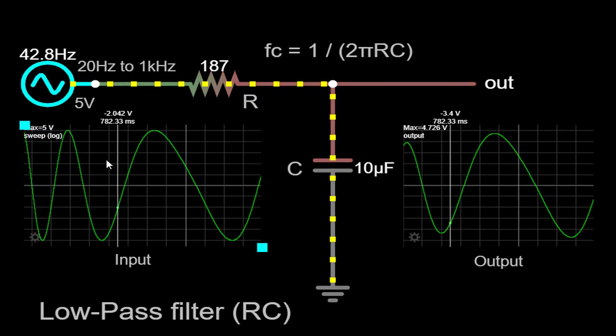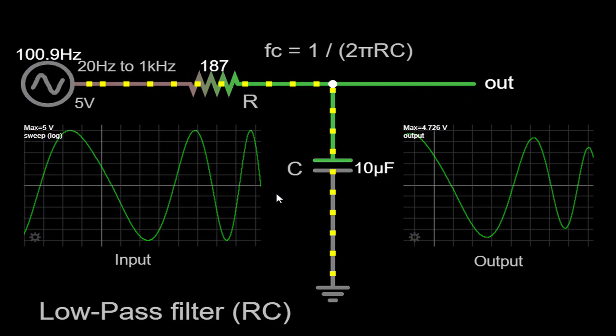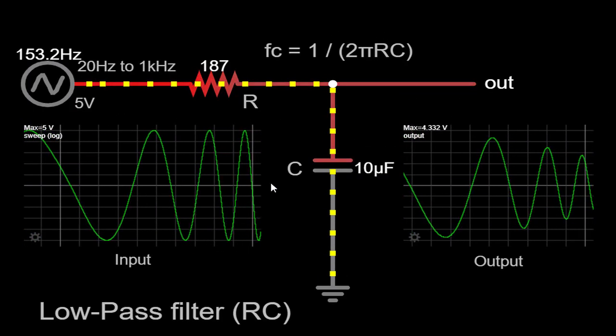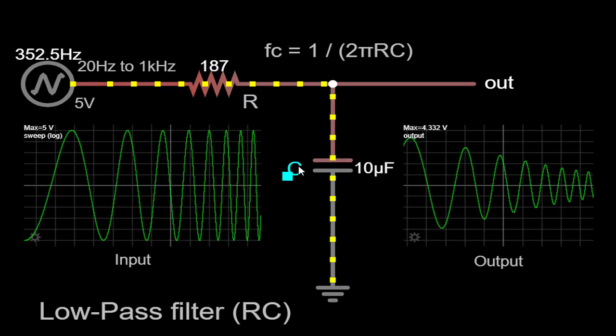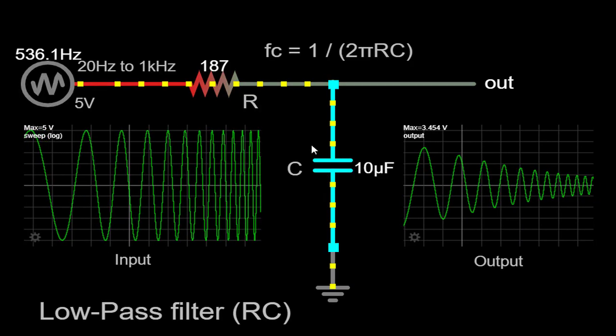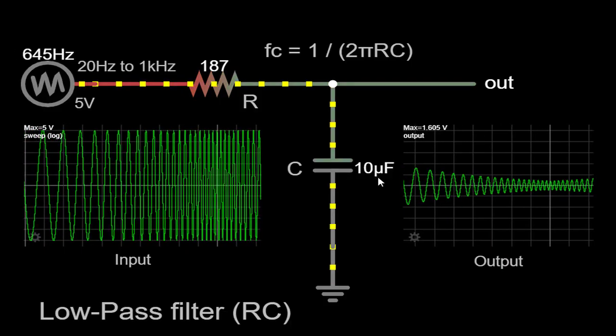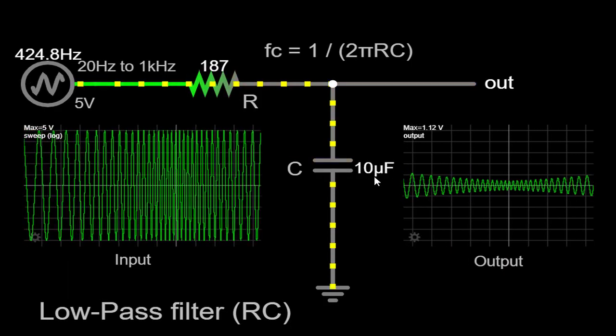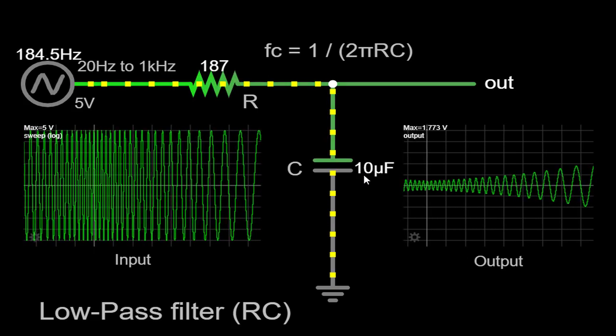Displayed on your screen is a circuit simulator running in real-time, enabling us to visualize the behavior of the RC low-pass filter. The circuit itself consists of a resistor and a capacitor connected in series. Specifically, we have a 187-ohm resistor and a 10-microfarad capacitor. When combined, these components form the RC low-pass filter which we will be analyzing today.